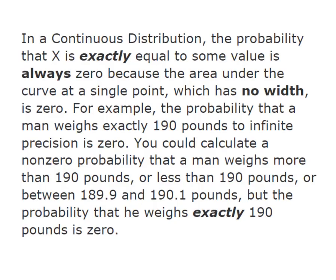Before we go any further, this is just a reminder, or maybe it's new information. In a continuous distribution, the probability that X is exactly equal to some value is always zero. This is because the area under a continuous distribution curve at a single point has no width. Because it has no width, the probability is zero. For example, the probability that a man weighs exactly 190 pounds to infinite precision is zero.